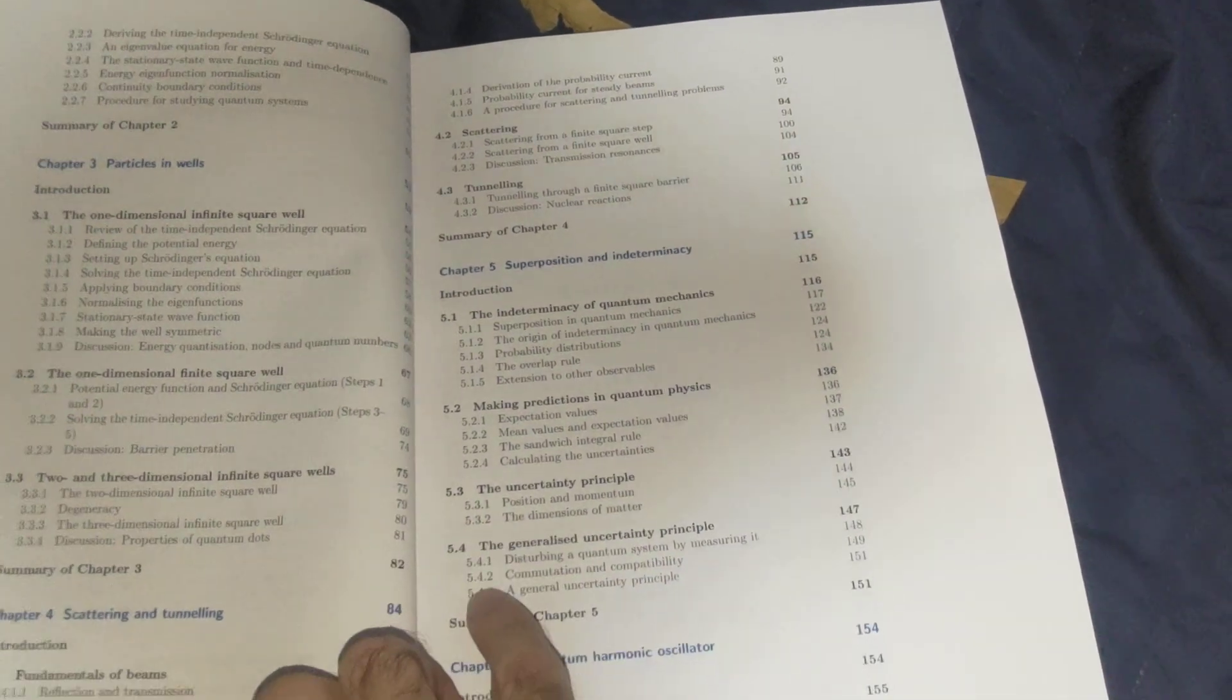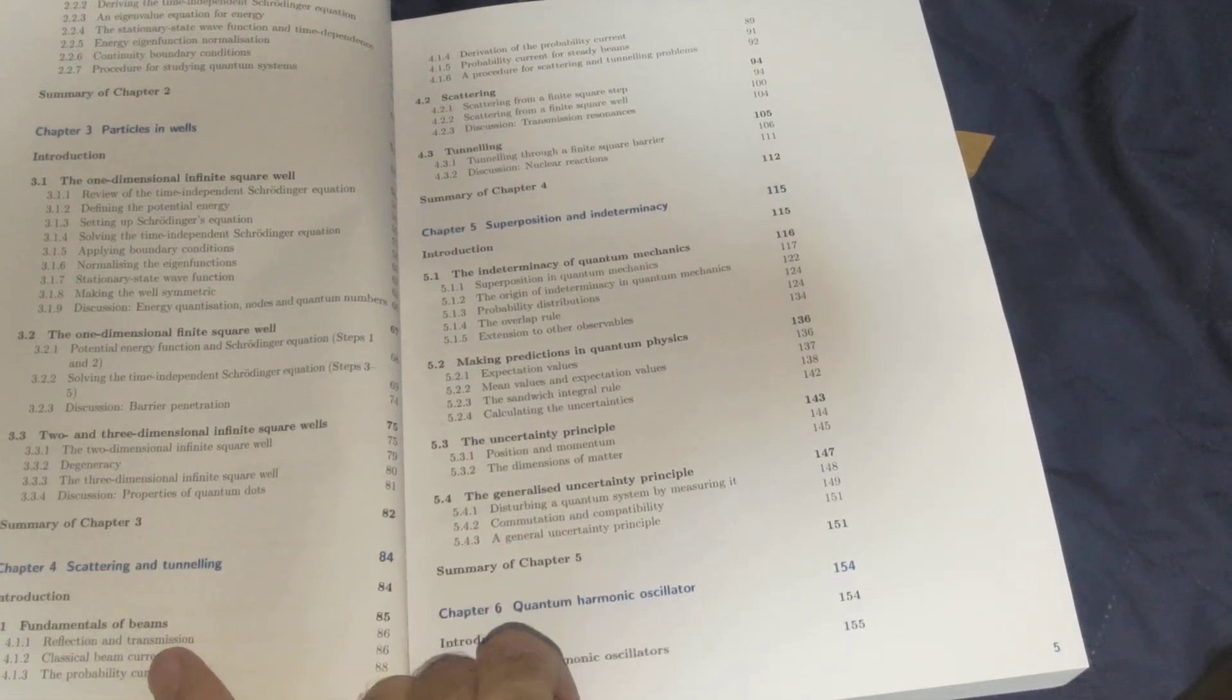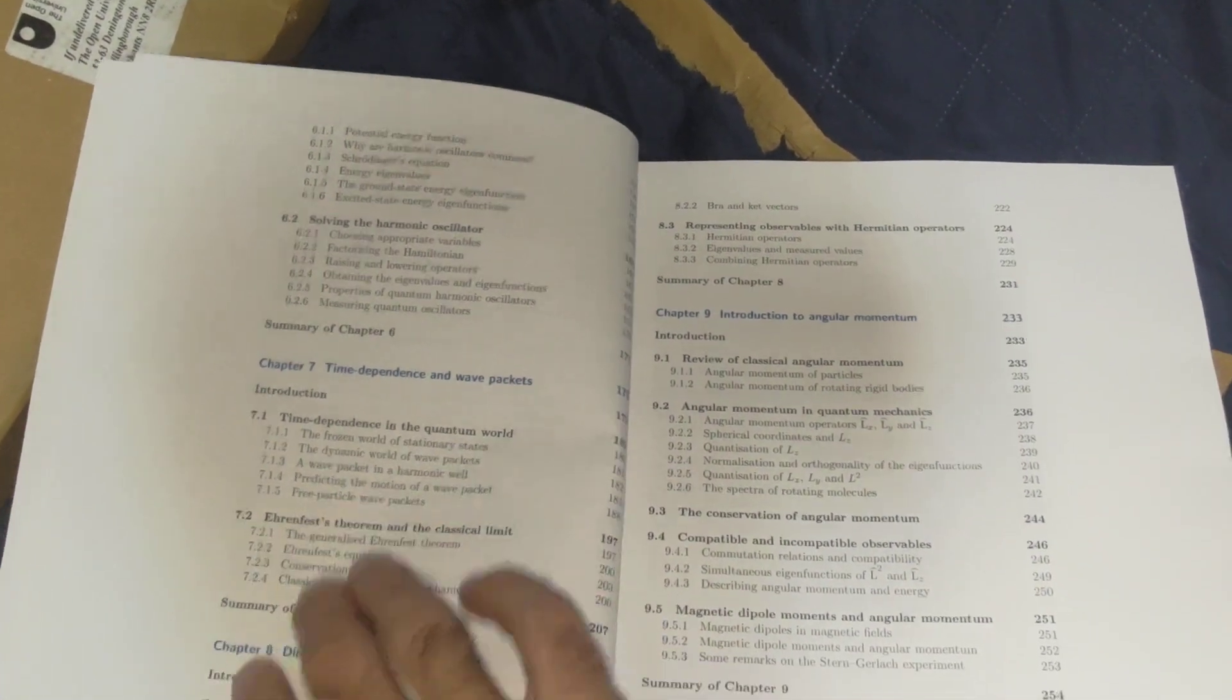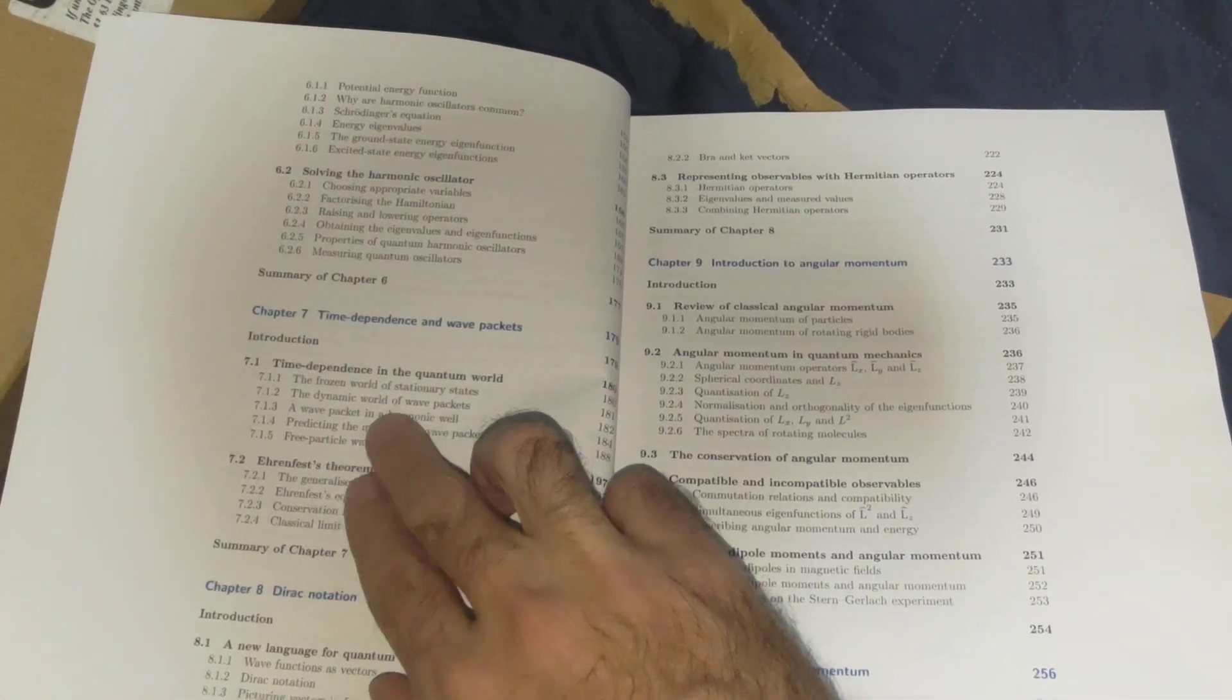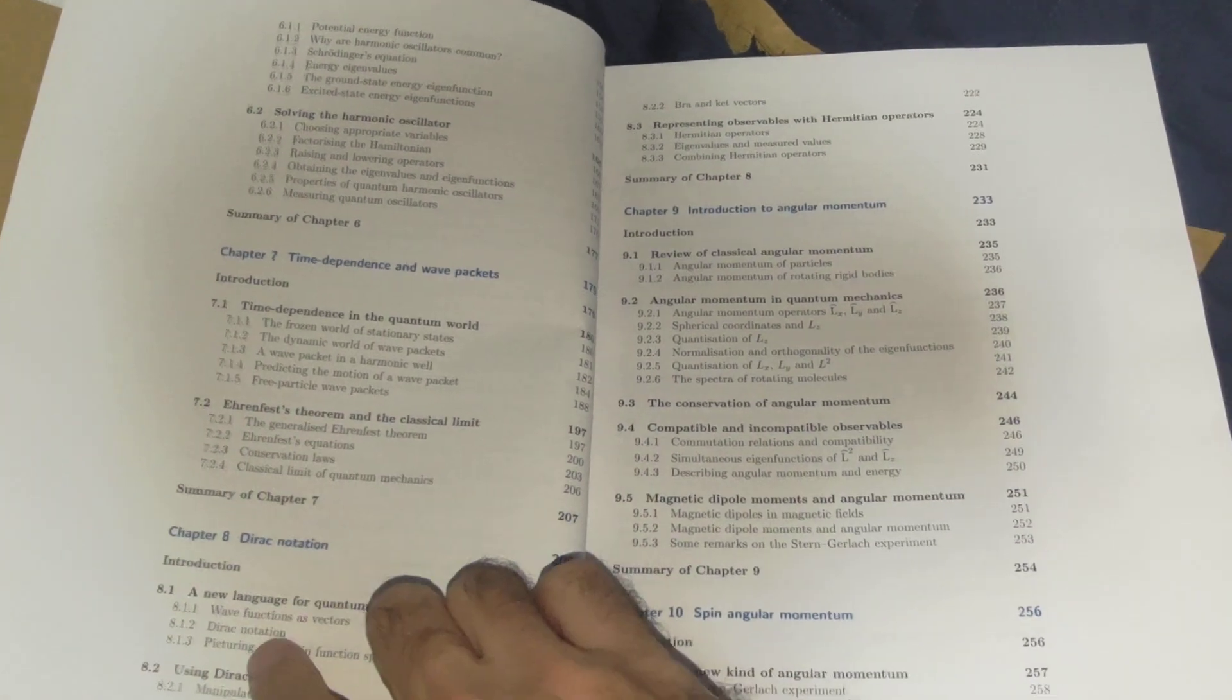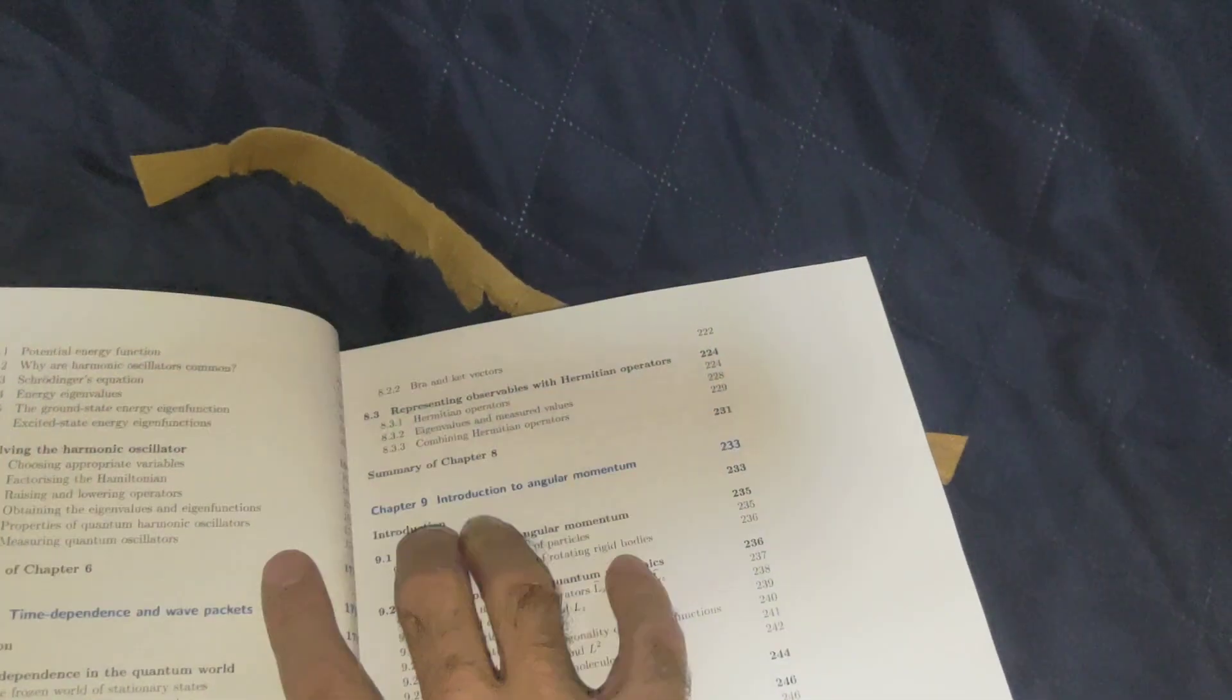Tunneling, indeterminacy of quantum mechanics, making predictions, uncertainty principle and a generalization of that, quantum harmonic oscillator and solving the harmonic oscillator, such an important thing, pops up everywhere in physics. Time dependence in the quantum world, Ehrenfest theorem, I'm probably not saying that's right, and the classical limits, new language of quantum mechanics, Dirac notation.